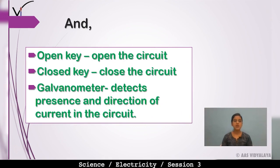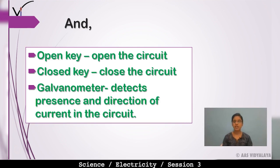Then there are the open key and closed key. The open key opens the circuit — this means current will not flow. The closed key closes the circuit — current starts to flow. Next is the galvanometer: like the ammeter and voltmeter, it is another device. The galvanometer detects the presence and direction of current in the circuit.